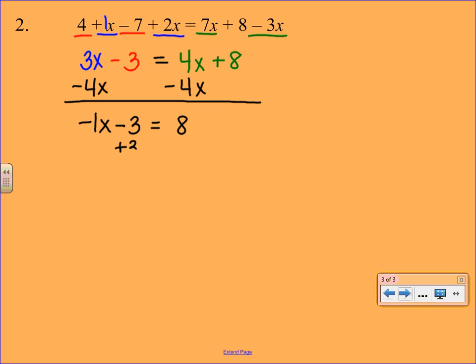Now we want to get rid of that minus 3 by doing the opposite, so we're going to add 3 to both sides. Bring down your minus 1x. Combine the 8 and the 3 to make 11. Then our final step is to divide by the negative 1, and our answer will be x equals negative 11.